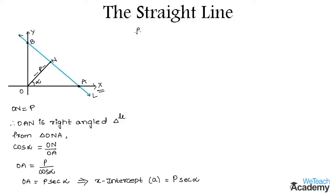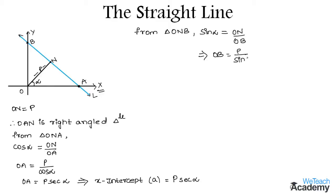Similarly, from triangle ONB, the value of sin alpha will be equal to the opposite side ON divided by the hypotenuse OB. So that implies OB is equal to P divided by sin alpha, which can be written as P·cosecant alpha. So OB is nothing but the y-intercept B, which is equal to P·cosec alpha.